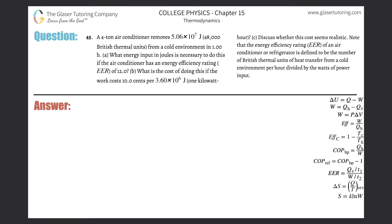Number 45, a 4-ton air conditioner removes 5.06 times 10 to the 7 joules, also known as 48,000 British thermal units (BTU), from a cold environment in one hour.